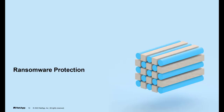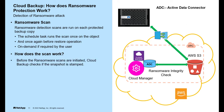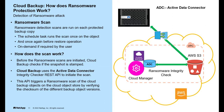Now let's understand how ransomware protection works. Ransomware detection scans are run on each protected backup copy in the following scenarios: a scheduled task runs the scan once on the object; it runs once again before a restore operation (optional); and on demand if required by the user. Before ransomware scans are initiated, cloud backup checks if the snapshot is stable. Cloud backup uses the Active Data Connector Integrity Checker REST API to initiate the scan, which triggers a ransomware scan on cloud backup objects by verifying checksums of different backup object versions. Based on the scan result, cloud backup initiates the recovery process.